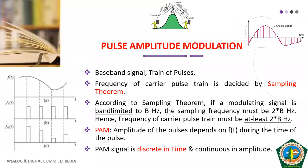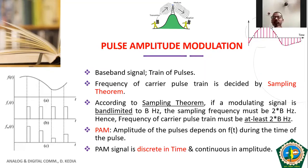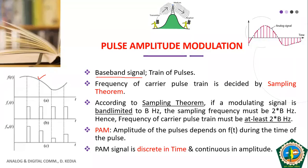Now we specifically discuss pulse amplitude modulation in detail. In PAM, we have the modulating signal — also called the baseband signal, meaning the signal without modulation. Then we have the carrier signal, which in pulse modulation is a train of pulses.